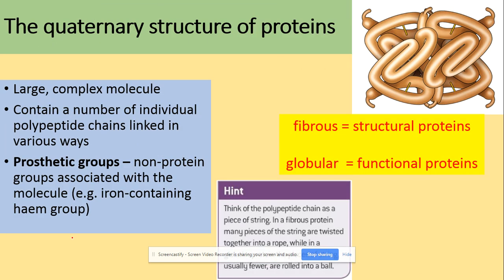Finally, quaternary structure: these are large complex molecules that contain a number of individual polypeptide chains linked in many different ways. If anyone asks you about quaternary structure, you need to say it's more than one polypeptide chain. What also gives them quaternary structure is the fact that they've got a prosthetic group — a non-protein group associated with the molecule.